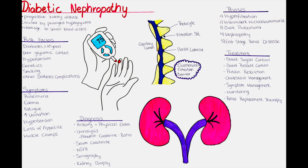We can also check the albumin-to-creatinine ratio. This test measures the ratio of albumin, a type of protein, to creatinine in a random urine sample. It helps to assess the amount of protein that is leaking into the urine and provides an early indicator of kidney damage. In the blood, we can measure the serum creatinine, a waste product from muscle metabolism.